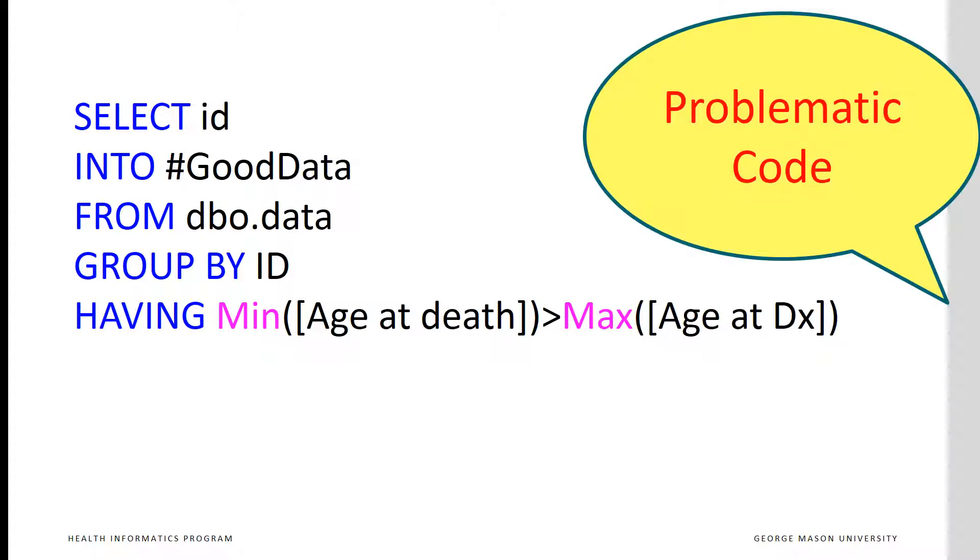What happens for the patient who has not died? This patient will have a null value for age at death, and the minimum of null value is also null. So the condition for the HAVING statement cannot be verified, and mistakenly these patients will be deleted from the good data file.